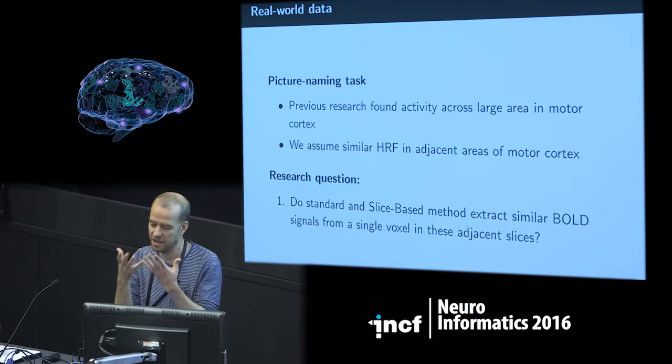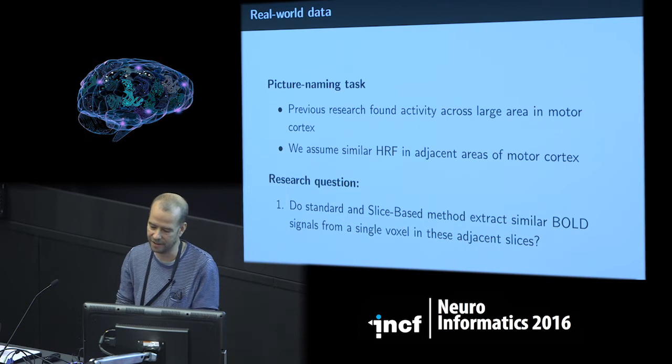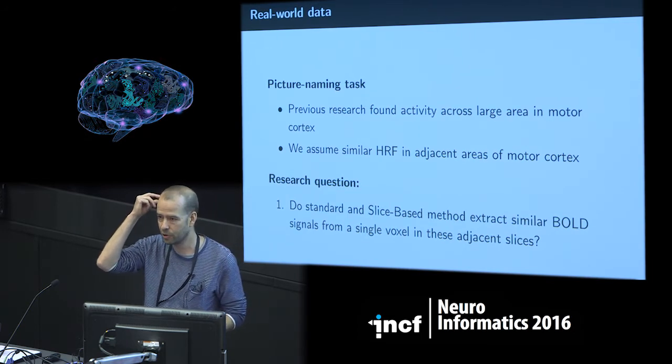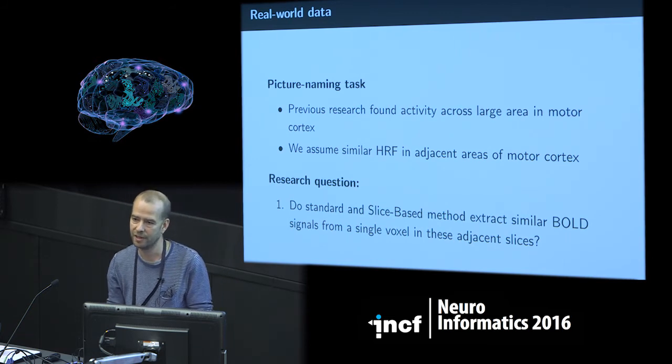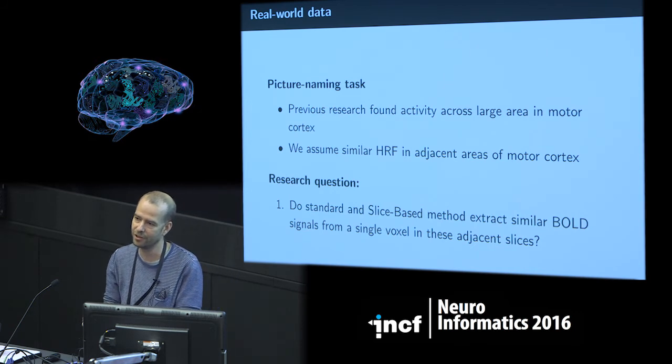For real-world data, we used a picture-naming task where subjects in the scanner see a picture and say what it is — for example, seeing a horse and saying 'horse.' This is a slow event-related design with long pauses to let the BOLD signal return to baseline. Previous research shows that a large portion of motor cortex is active during this task. We looked at three slices centered on motor cortex, assuming each slice would show a similar hemodynamic response.